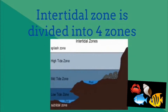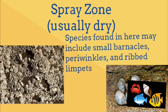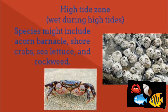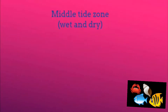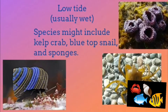Intertidal zone is divided into four zones: spray zone, usually dry — species found here may include small barnacles, periwinkles, and rib limpets. High tide zone, wet during high tides — species might include acorn barnacles, shore crabs, sea lettuce, and rockweed. Middle tide zone, wet and dry — species might include California mussels, sea palms, and sponges. Low tide zone, usually wet — species might include kelp crab, blowtop snail, and sponges.